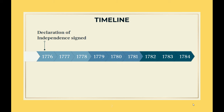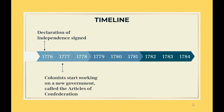They realize right away that they need to get started on creating a new government, because if they're not going to be part of Great Britain, they need to have their own government. So the colonists start working on a new government, and they call it the Articles of Confederation. That is just a year after they sign the Declaration of Independence.